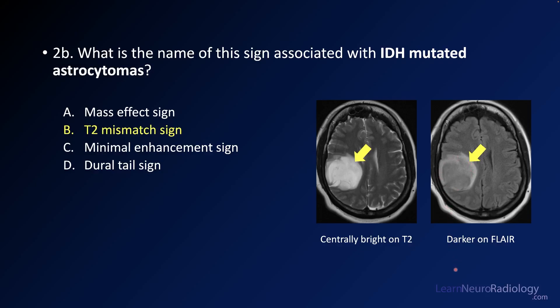The T2 mismatch sign is associated with IDH-mutated astrocytomas. Thanks to everyone for tuning into the second case. We're going to have more cases coming up — be sure to like this video and subscribe to the channel so you get notifications when more videos are put out. We're hoping to have several more brain tumor board review cases this spring, so be looking out for those. Thanks, everyone.